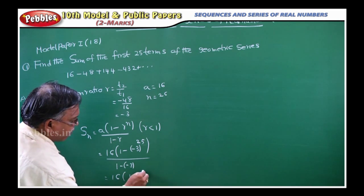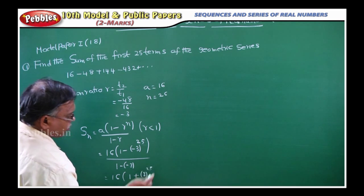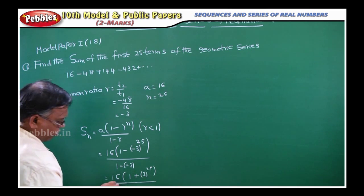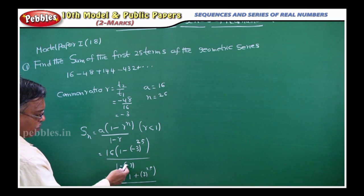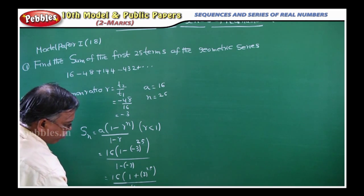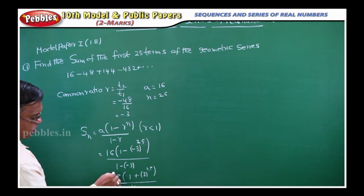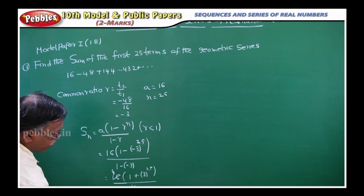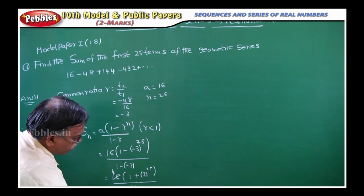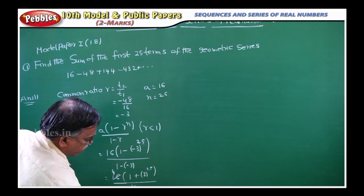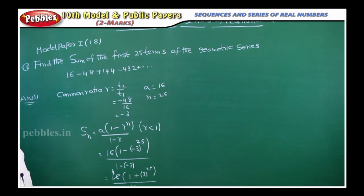So plus 3 power 25 by 1 minus of minus plus, 1 plus 3, 4. That is what? 4 into 1 plus 3 power 25. That is your answer.